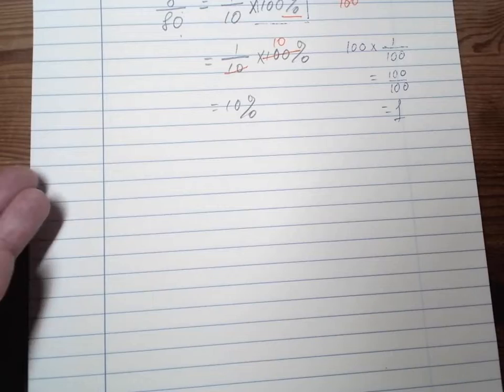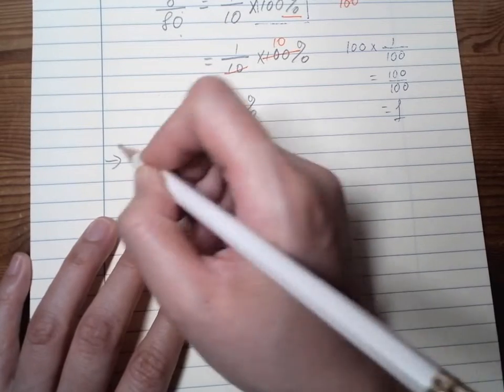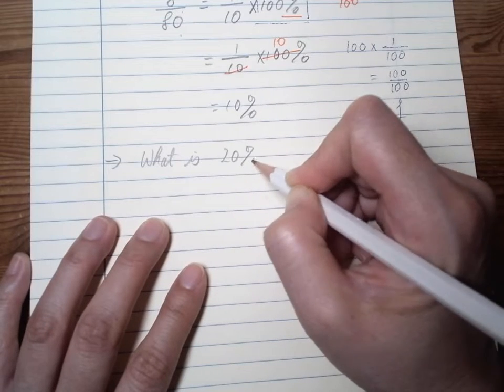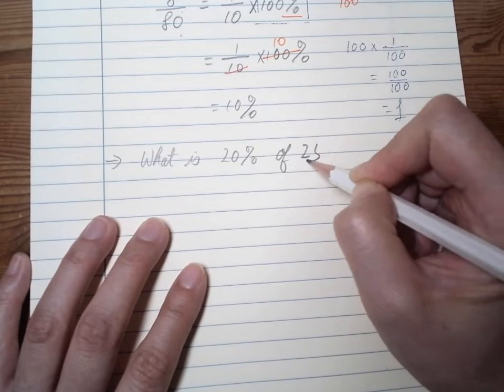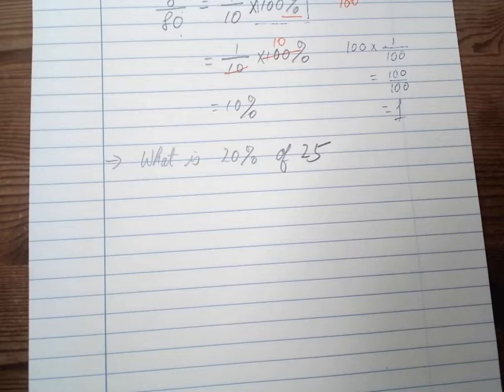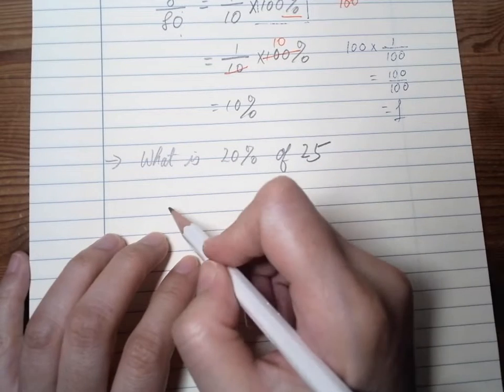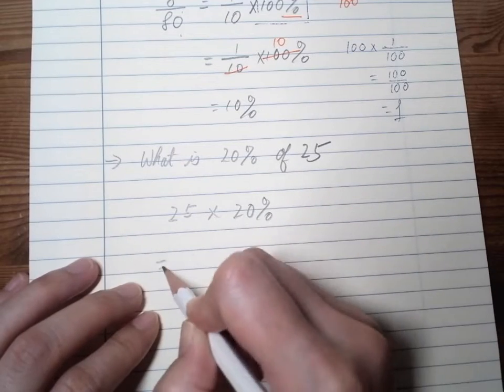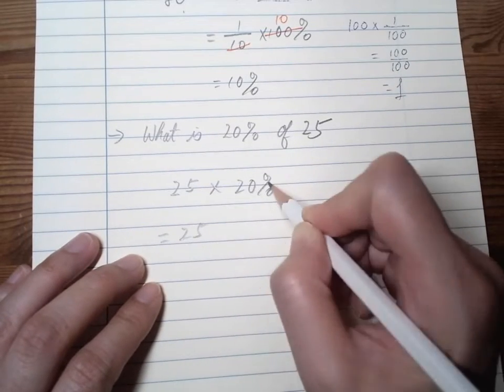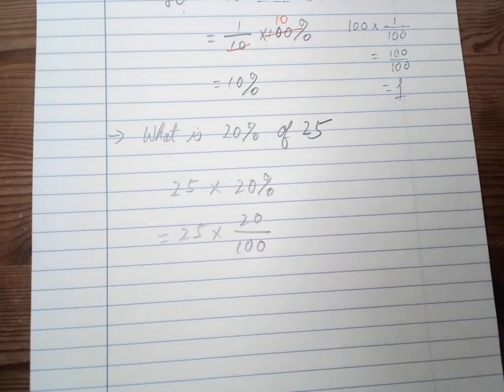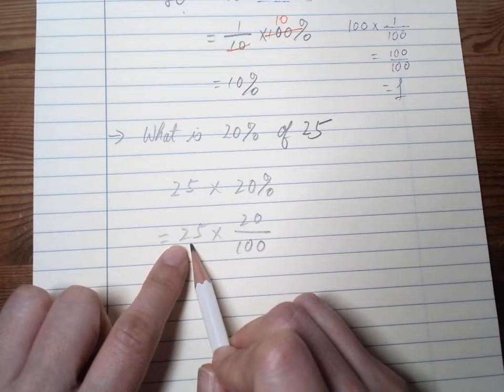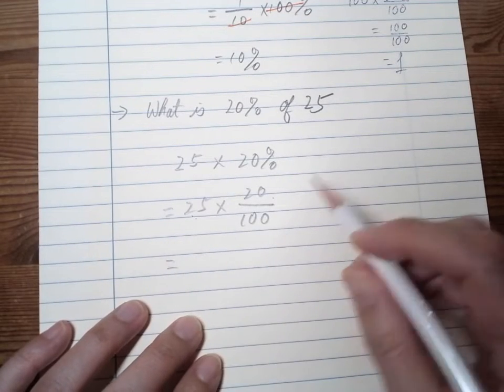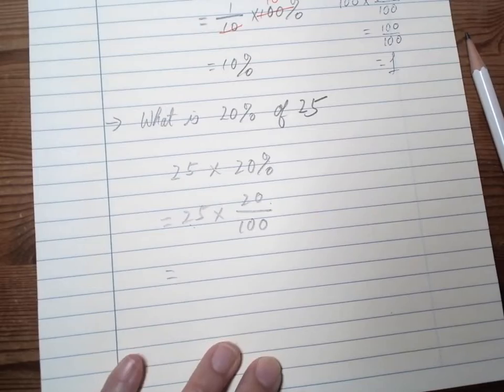So we might have: what is 20 percent of 25? This in fraction will be 20 over 100, because we are trying to divide 25 into 100 parts and take 20 of it. So we do our cancellation again.